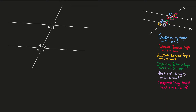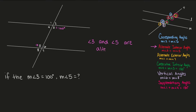Let's find the value of another angle given a condition. We have two parallel lines and a transversal. We're told the measure of angle 3 equals 100 degrees — what is the measure of angle 5? Well, angle 3 and angle 5 are alternate interior angles, so the measure of angle 3 equals the measure of angle 5, which is 100 degrees.